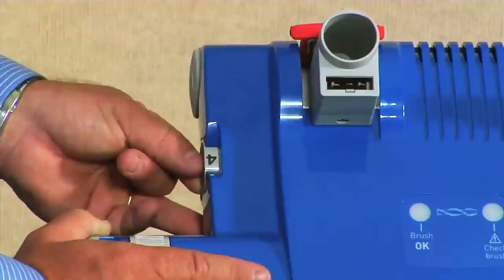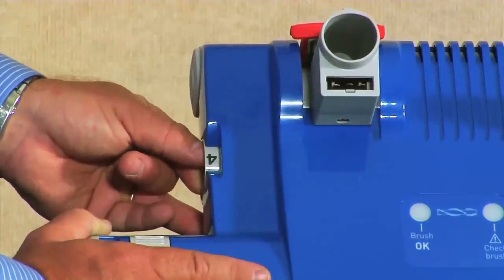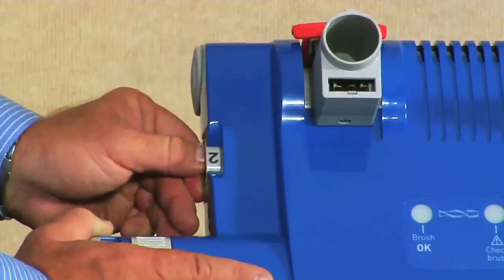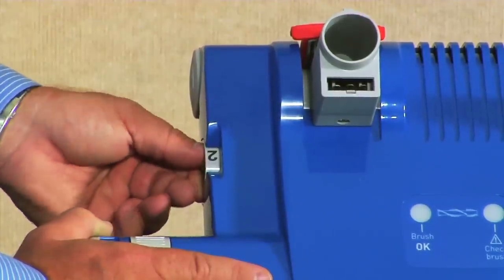To adjust your Versimatic properly, set the dial to the highest setting and then dial down notch by notch until the brush ok light comes on.